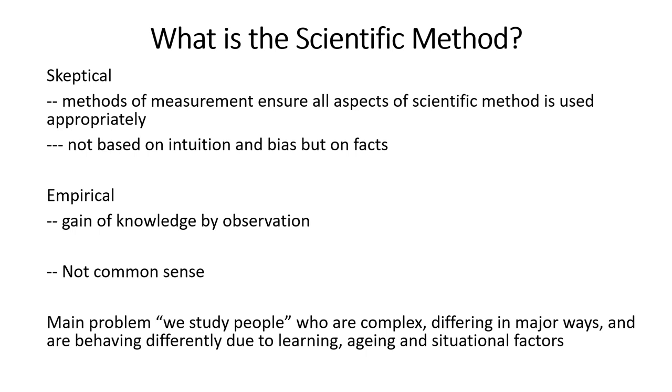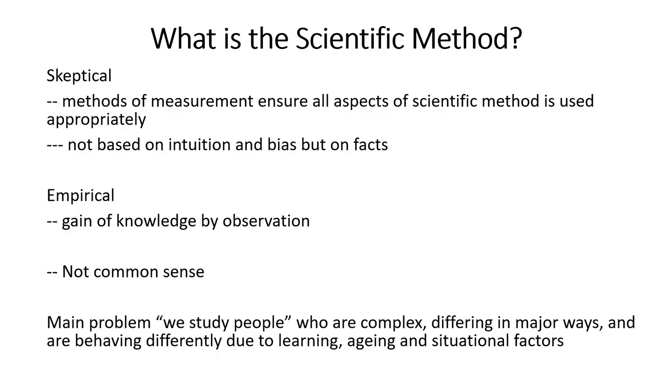The scientific method should be empirical in nature, meaning the knowledge we gain about a problem is based on observation. We observe things in real time, collect data, test it against control data, and then arrive at solutions. We do not just create imaginary or hypothetical solutions. Scientific method involves empiricism — observing to gain data and generating results to create knowledge.